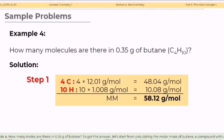Now, let's have example number 4. How many moles are there in 0.35 grams of butene? To get the answer, let us start from calculating the molar mass of butene, a compound with 4 carbons and 10 hydrogen atoms. From the given solution, we get a value of 58.12 grams per mole for the molar mass because you need to get the individual molar mass of carbon and hydrogen to get the total molar mass.